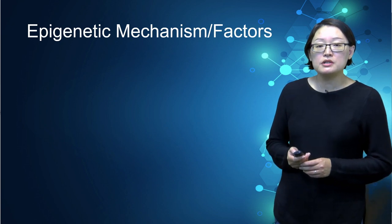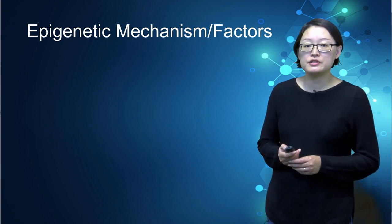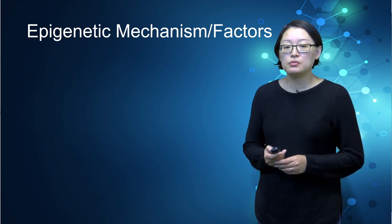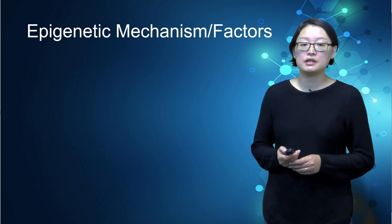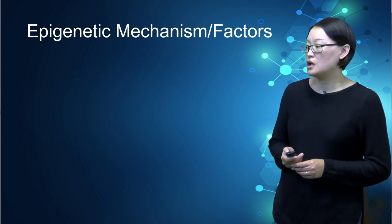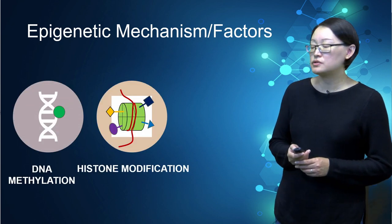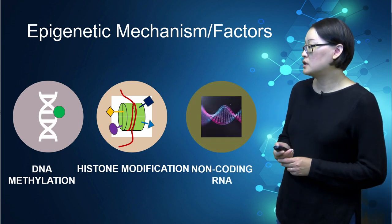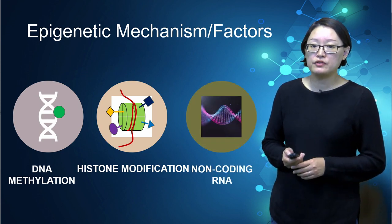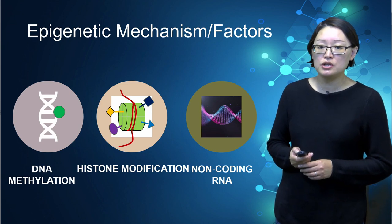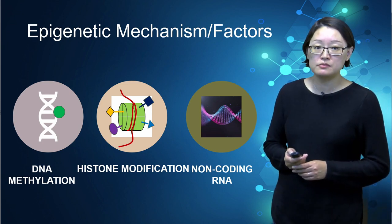Epigenetics regulates phenotypes at many levels through various mechanisms. Both DNA transcription and RNA translation can be modulated by these factors, which include DNA methylation, histone modification, and non-coding RNA. Today I'm going to explain briefly how each of these might influence gene expression and protein expression.